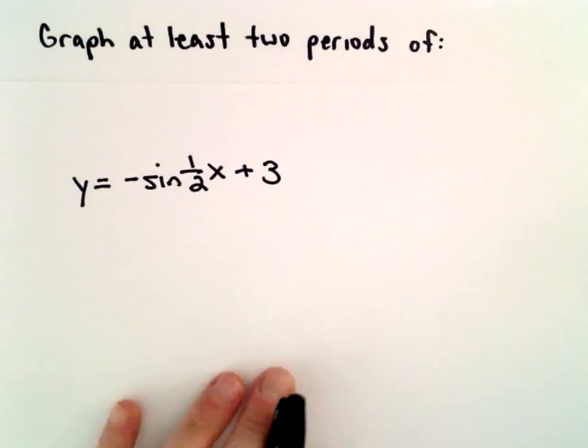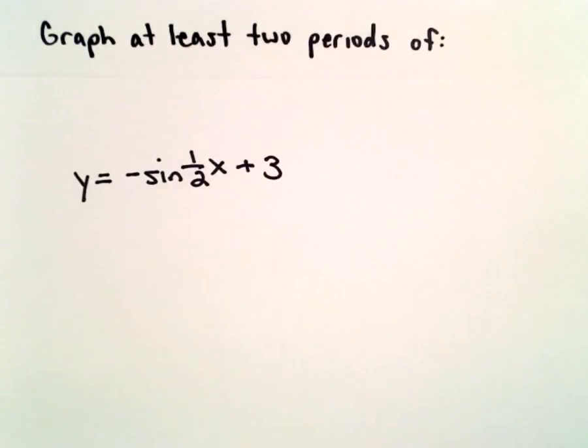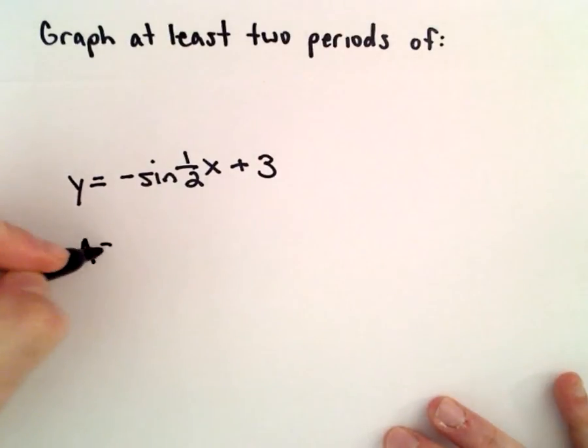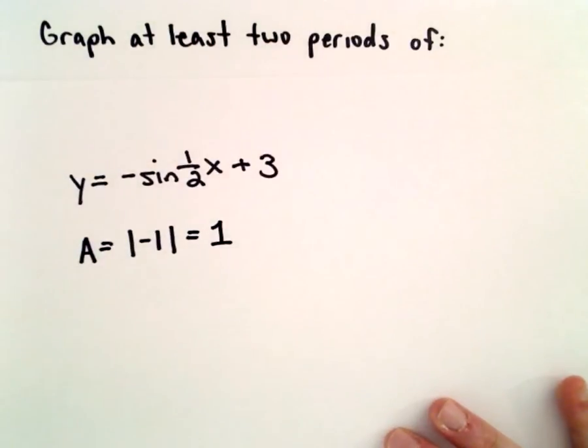Okay, here we're going to graph two periods of y equals negative sine of 1 half x plus 3. The amplitude in this case will be the absolute value of negative 1, which will be positive 1.